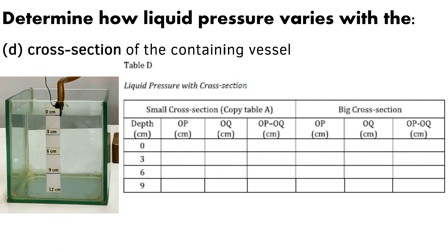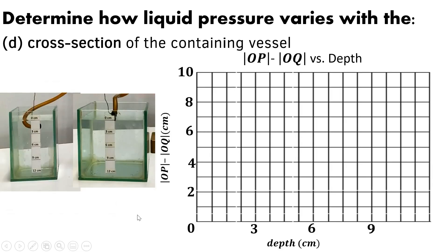The last procedure is to investigate how liquid pressure varies with the size of the container. Copy your data from table A, which was done using a small container. Now repeat the same procedure — probe down — using a bigger container. Record OP, OQ, and the difference at 0, 3, 6, and 9 cm. Graph the data showing two lines: one for the small container and one for the big container, then analyze based on the graph.